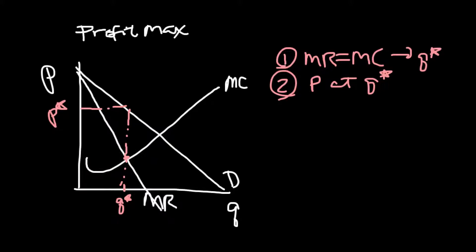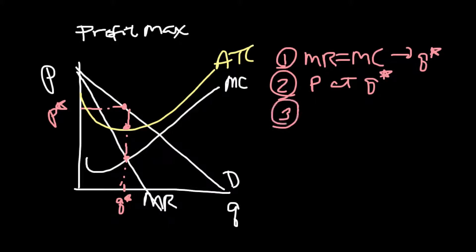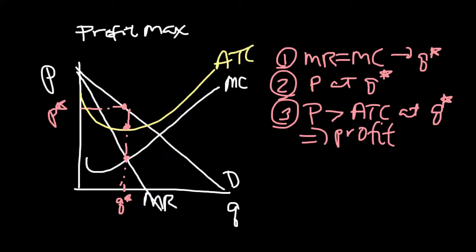Are they making a profit or not? The curve we're missing is average total cost. You know the price you're charging and the quantity you're making — to know if you're making a profit you need to know how much it costs on average to make that particular unit. So we need the average total cost curve. If P star is above average total cost at Q star, that means profit — price is greater than average total cost.